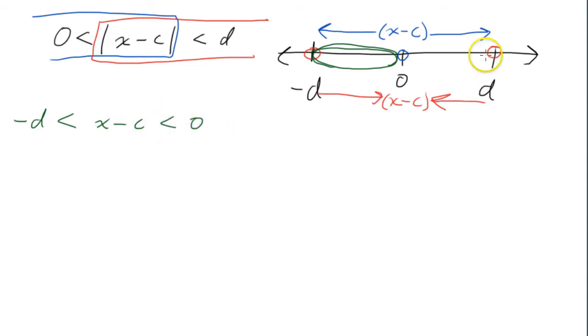We also have this other part where the quantity x minus c has to be greater than 0 and less than d. So we have 0 is less than the quantity x minus c is less than d.